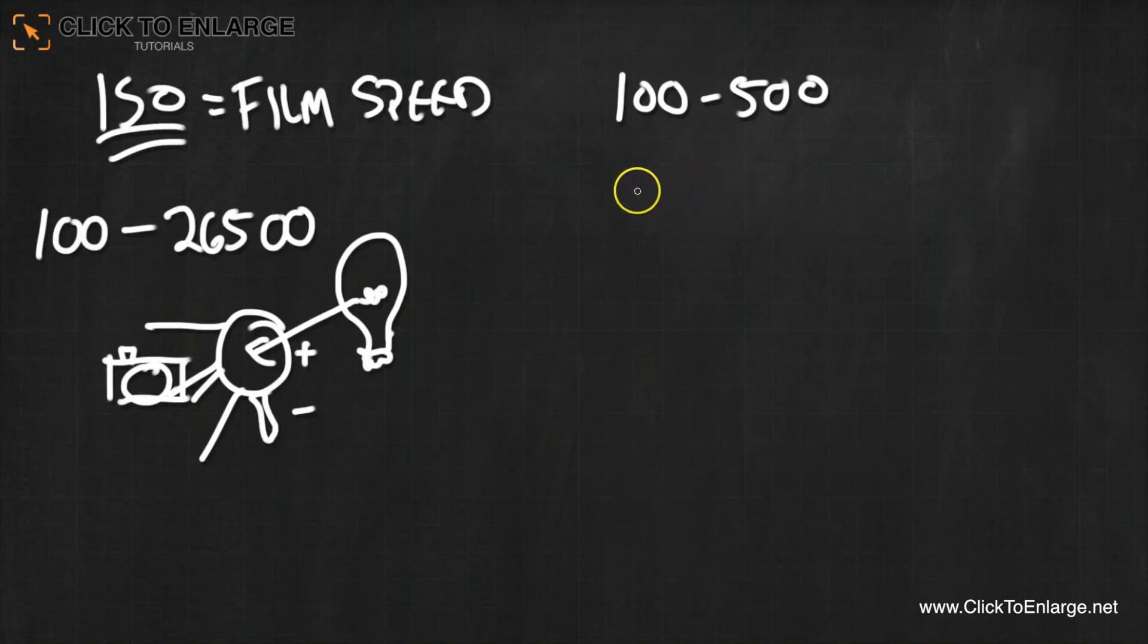When I would shoot events, you can get away with 800 to maybe 1,600. This really depends on what kind of camera you have. Some cameras can handle the higher ISOs very well.